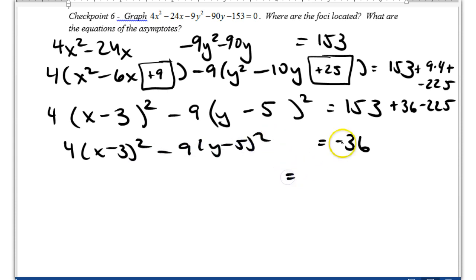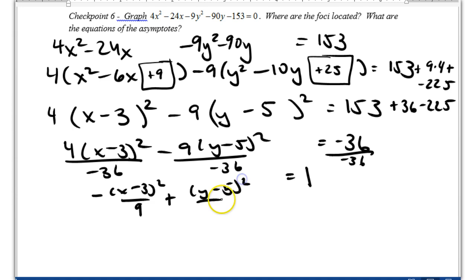My last step here is divide by negative 36, which gives me 1 on this side. And on this side, 4 divided by negative 36 is negative x minus 3 squared over 9. Negative 9 divided by negative 36 is positive y minus 5 squared over 4.